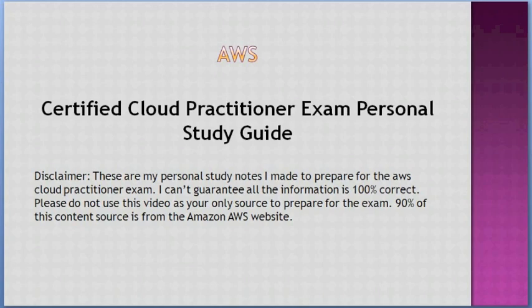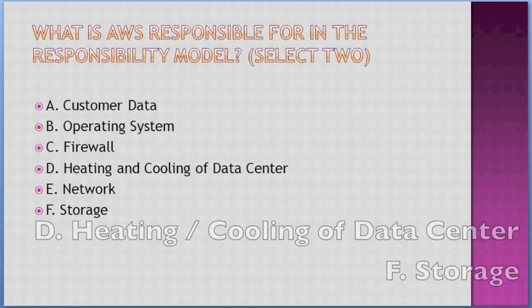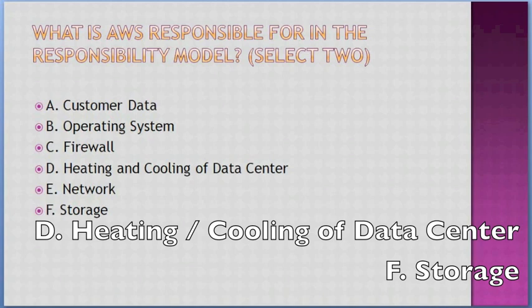What is AWS responsible for in the shared responsibility model? Select two. Options: A. Customer data, B. Operating system, C. Firewall, D. Heat and cooling of data center, E. Network, F. Storage. Answer: D — heating and cooling of data center, and F — storage.